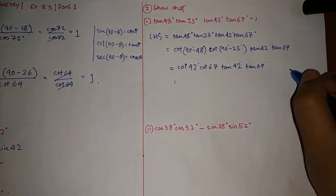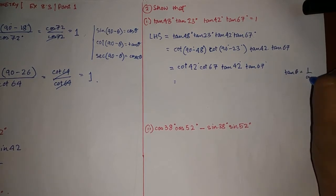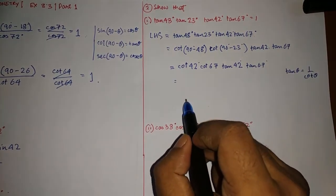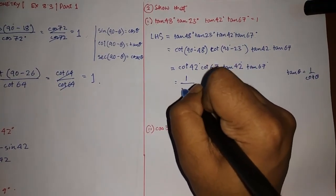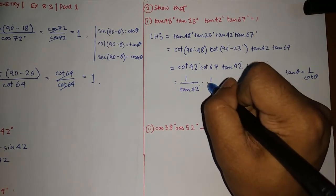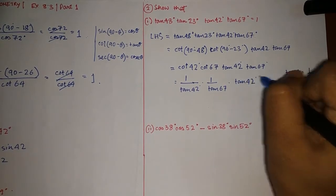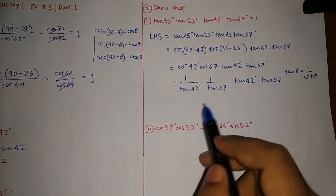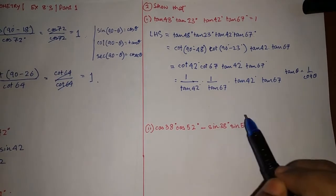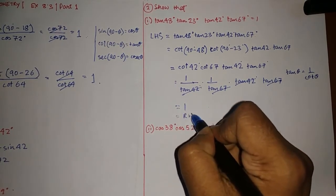You know that tan θ = 1 / cot θ, so you can convert cot into tan by reciprocating. Reciprocating cot 42° gives (1 / tan 42°) and cot 67° gives (1 / tan 67°). The denominator has tan 42° and tan 67°, and the numerator also has tan 42° and tan 67°, so they cancel each other and we get 1, which equals the right hand side. Hence shown.